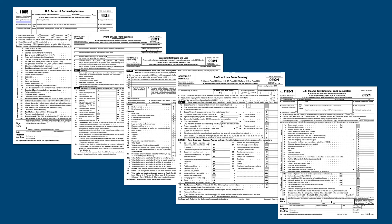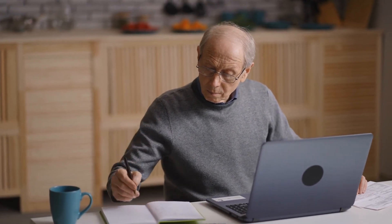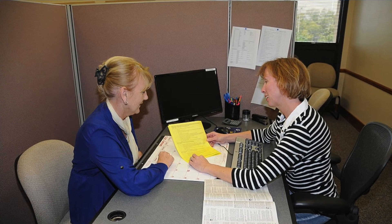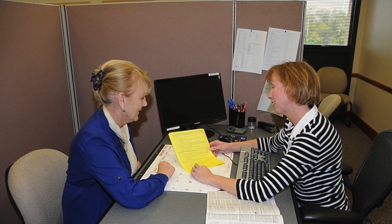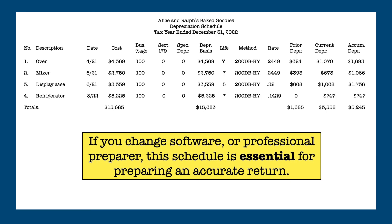You can now see it is very important to keep careful track of any depreciation you take. This is done using a depreciation worksheet, which is not sent with your tax return but instead kept with your records. If you use a computer to prepare your taxes, the software will automatically prepare a worksheet for you. And if you use a paid preparer, he or she should provide you with one. If you decide to change software or paid preparer, it is essential to have this worksheet so the new software or preparer can properly calculate your depreciation for subsequent years.